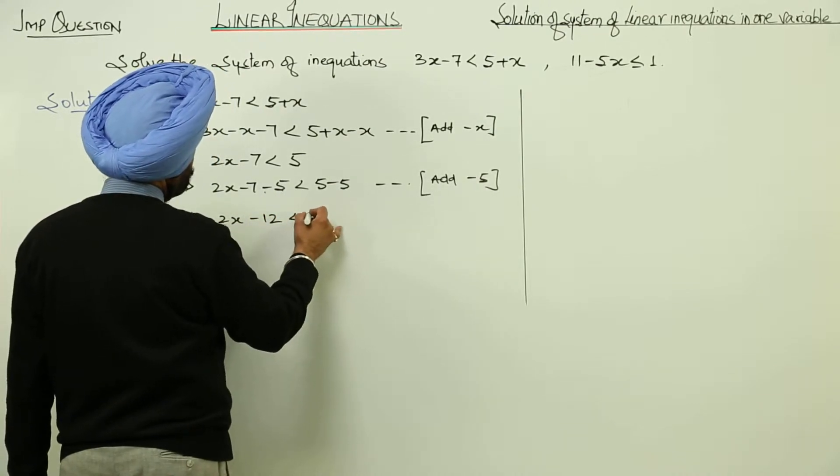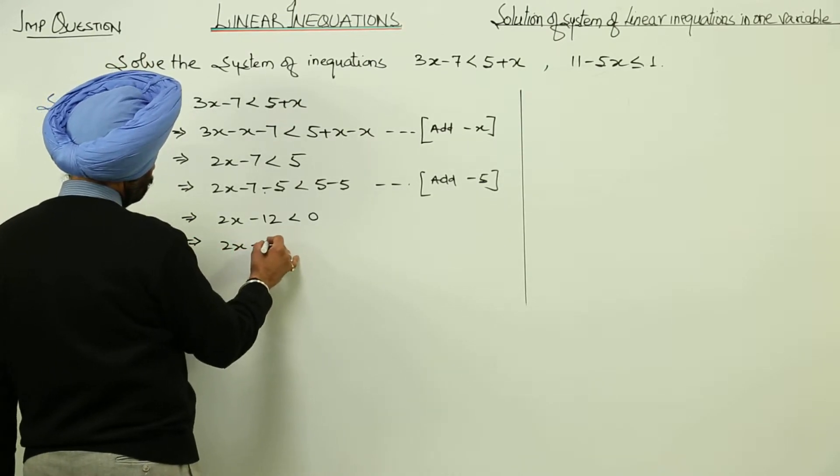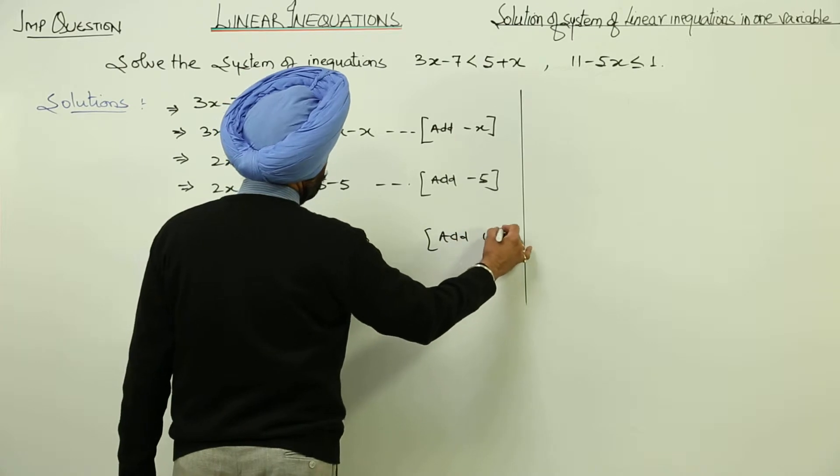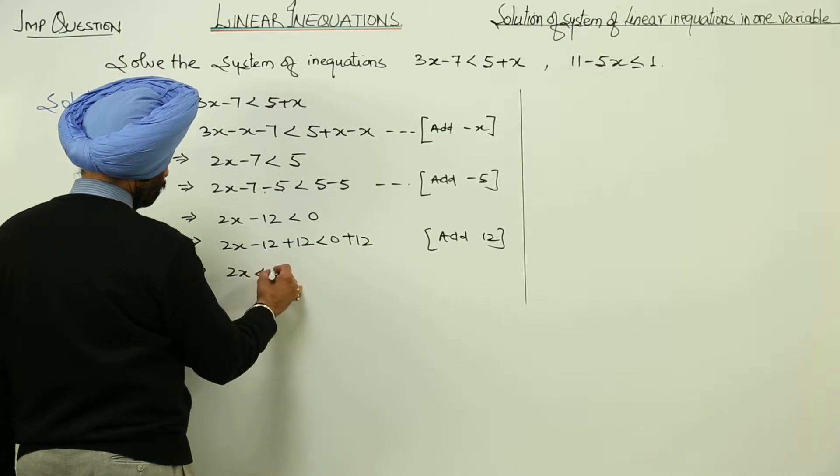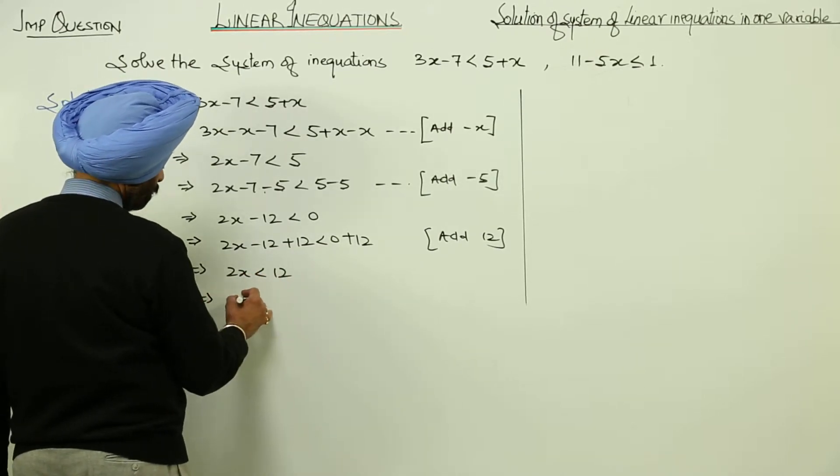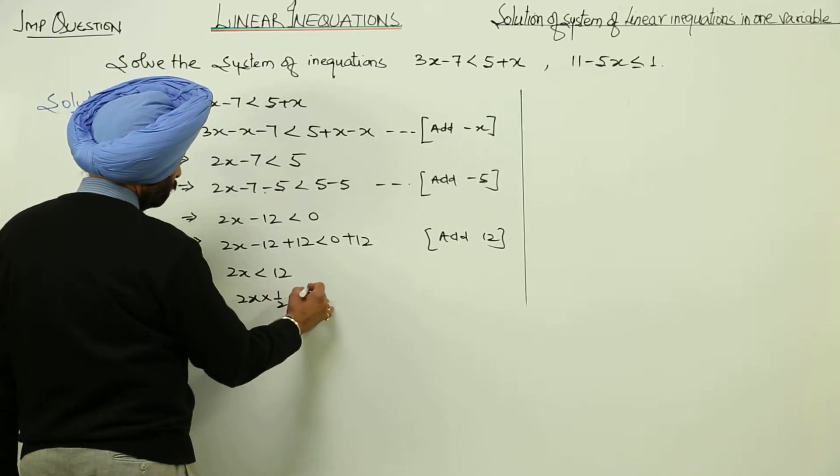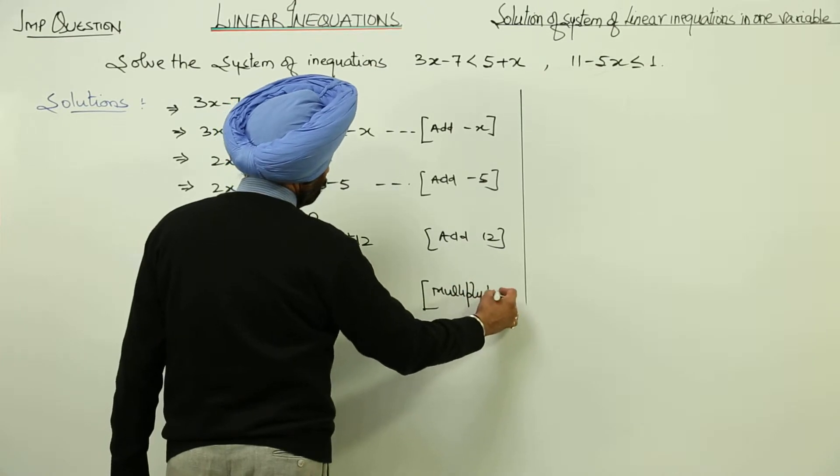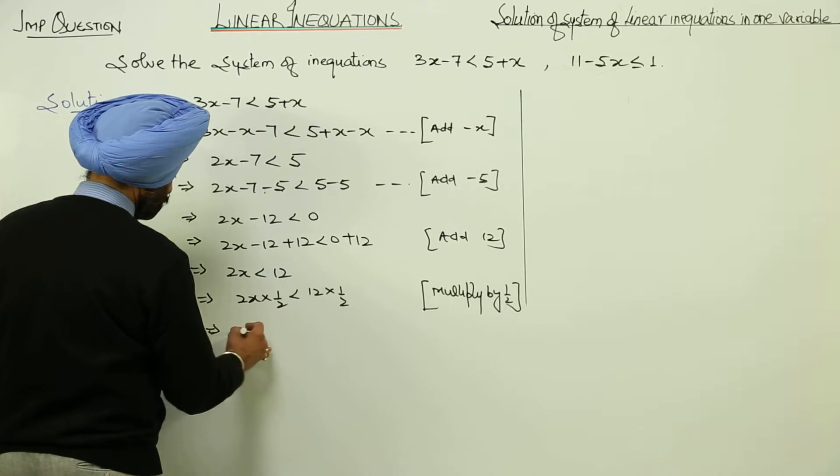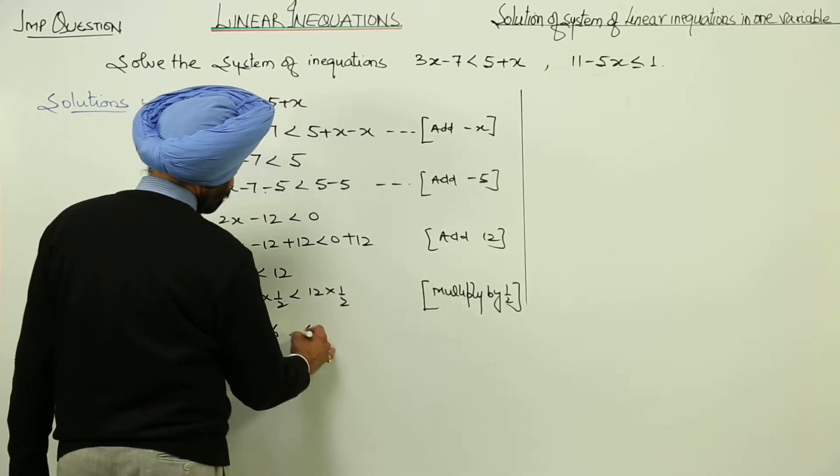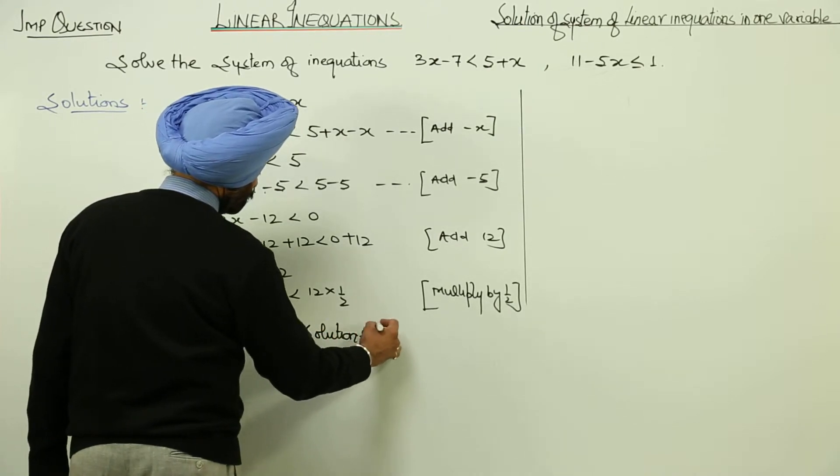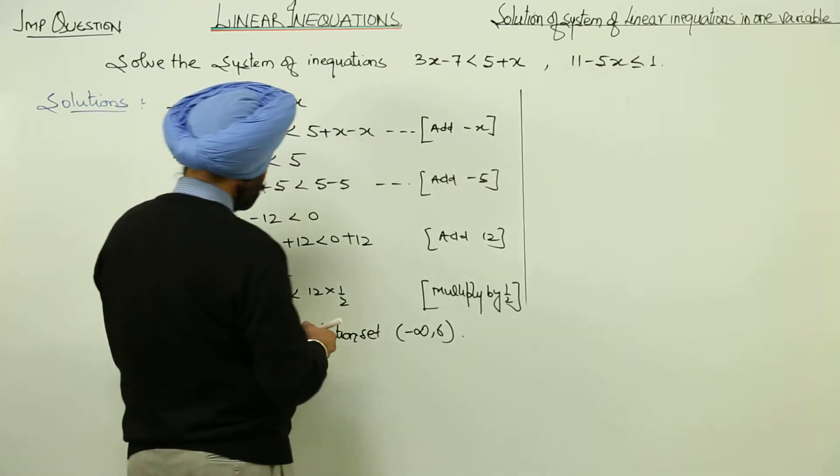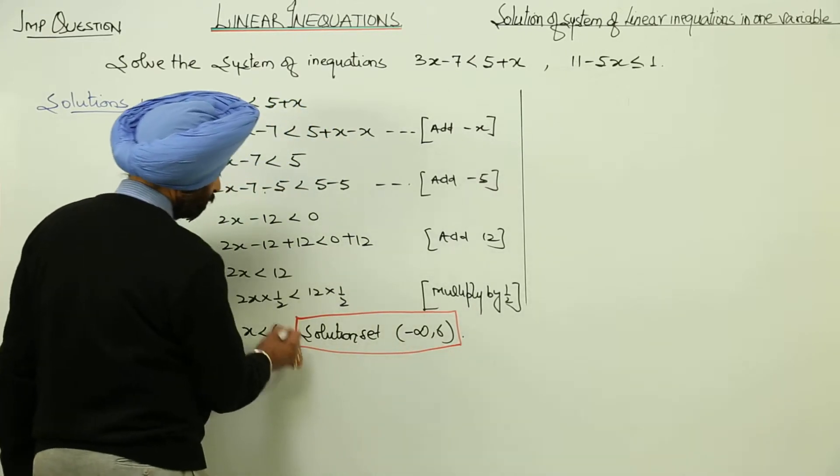We get 2x is less than 12. Dividing both sides by 2, we get x is less than 6. So the solution set for the first equation is negative infinity to 6.